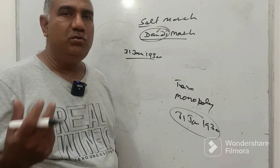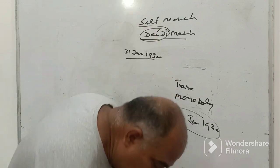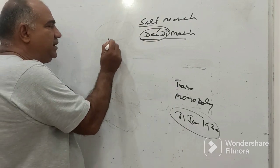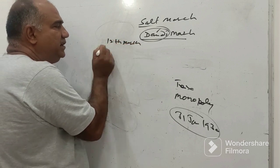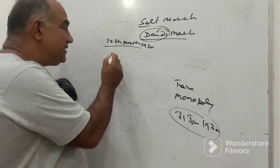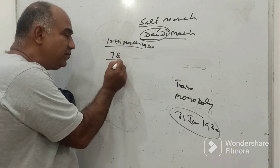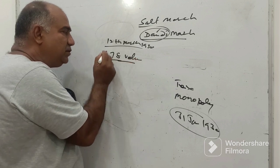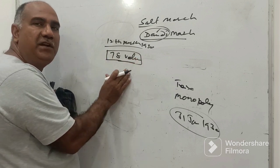So Gandhi ji had to start with the movement, and on 12th of March as was stated by Gandhi, he did exactly on the same day. 12th of March 1930, Gandhi ji started with 78 volunteers. This number is very important - 78 volunteers.